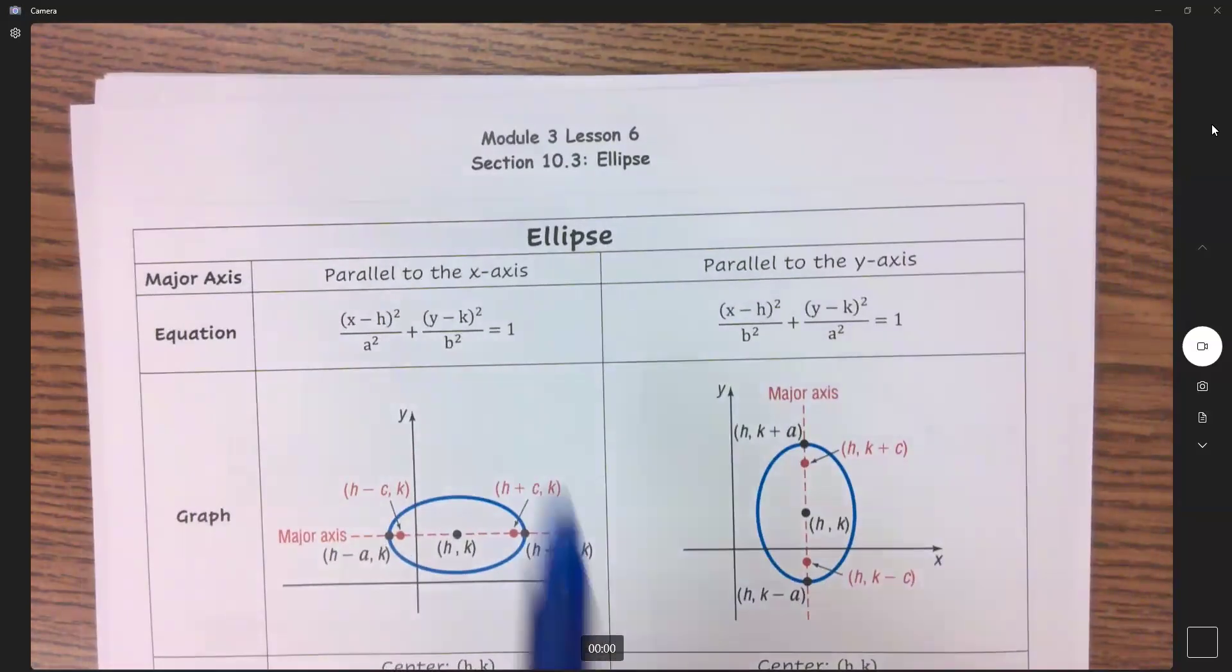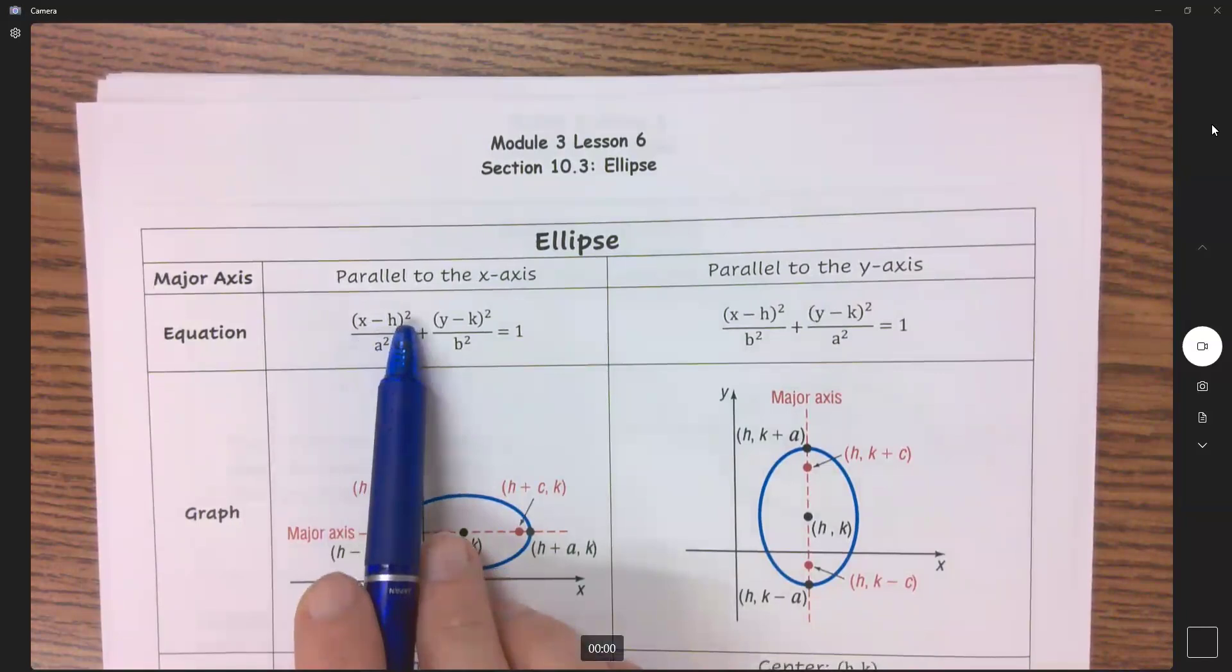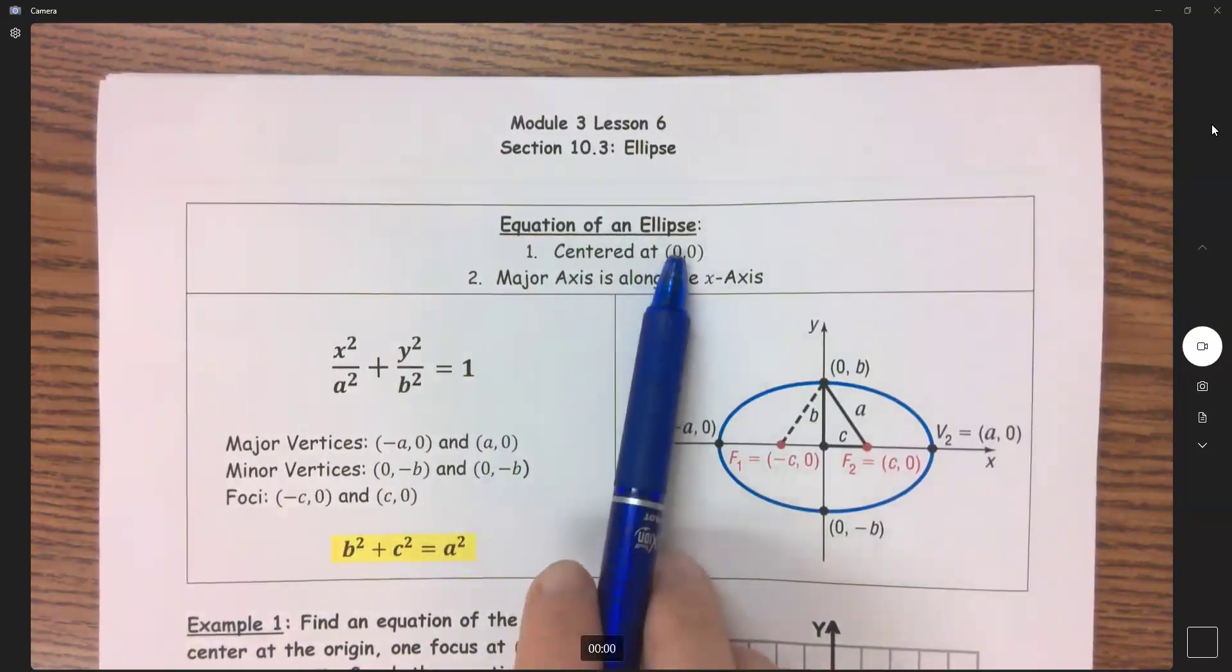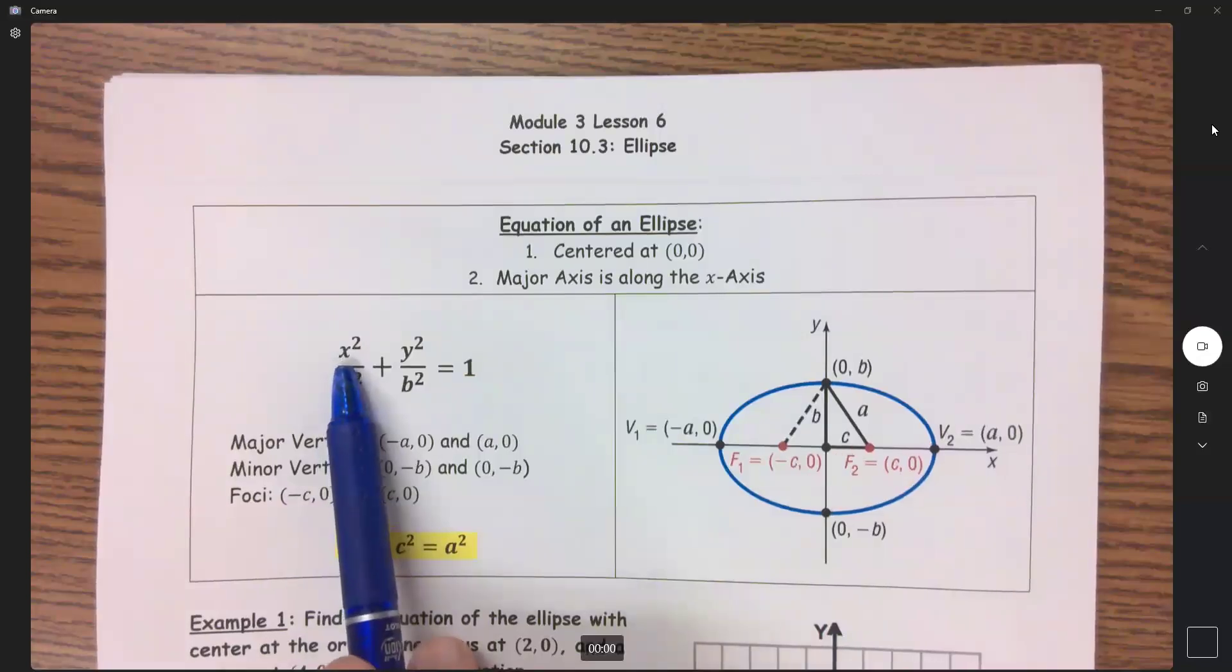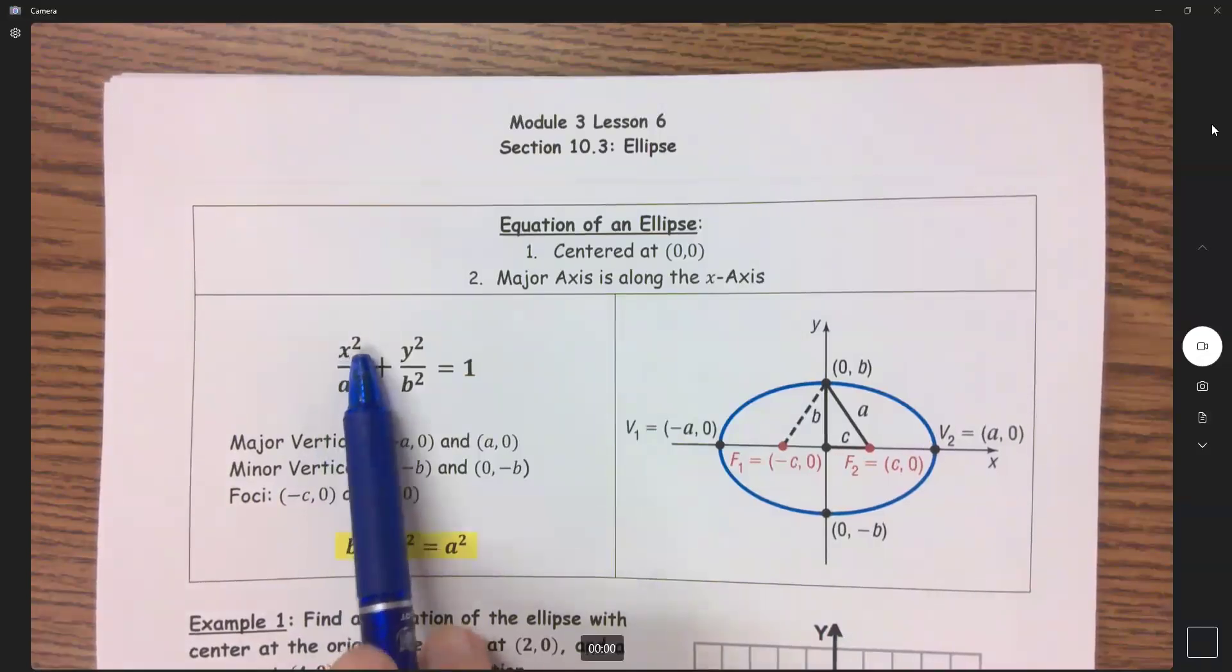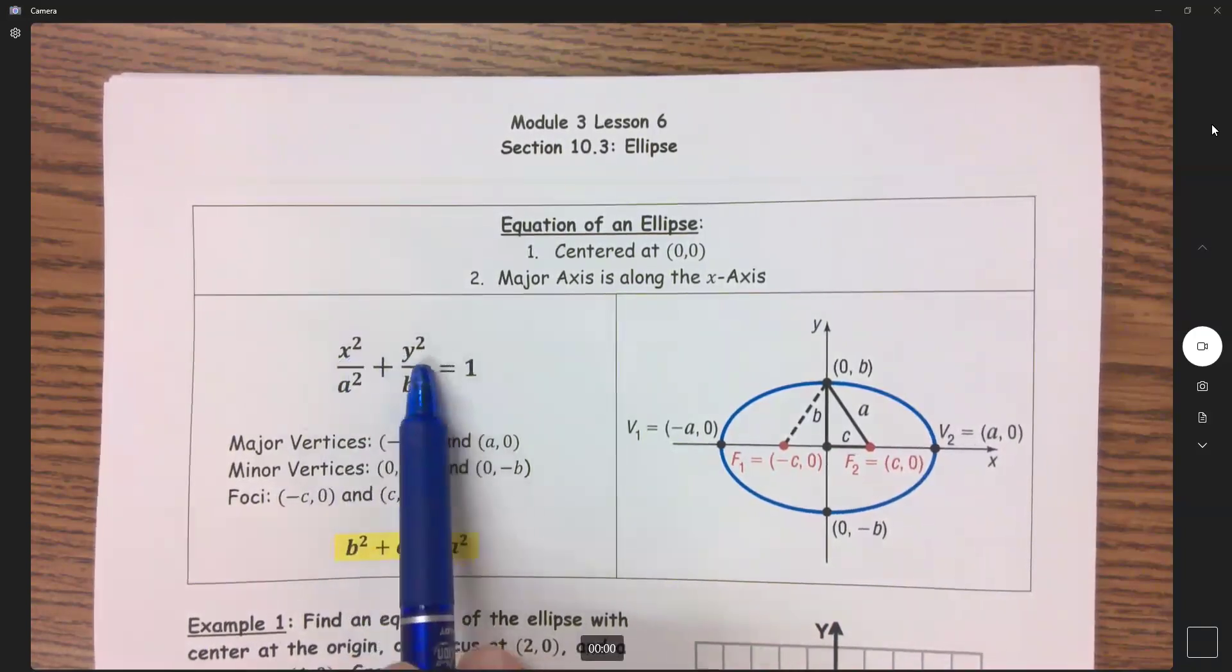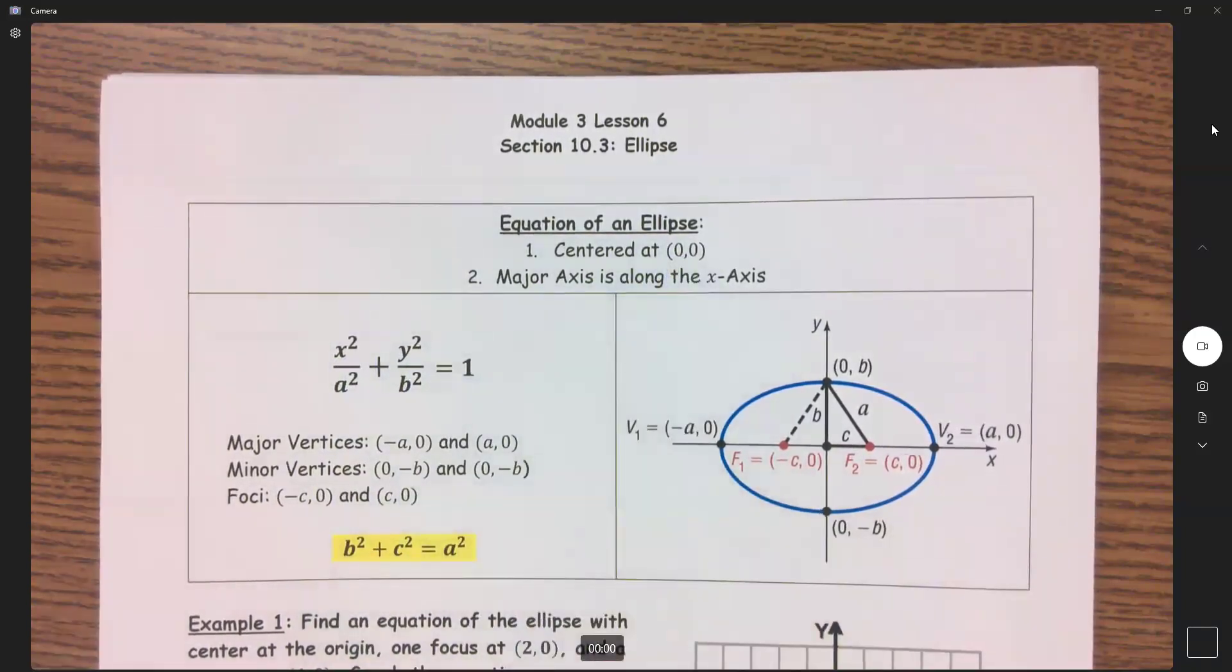When we start shifting it, we're going to get our x minus h quantity squared and our y minus k quantity squared. But here, if it's 0,0, that's the same as x minus 0, which is just x, and y minus 0, which is just y. So when I have x squared, y squared, that's how I know it's centered at 0,0.